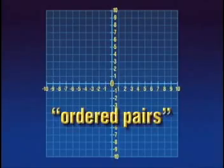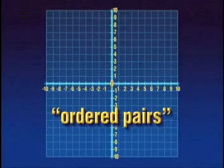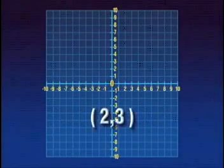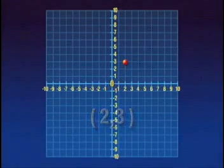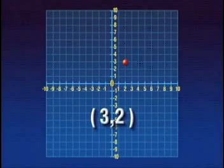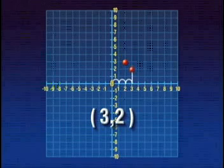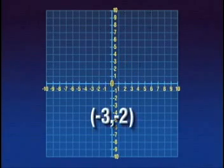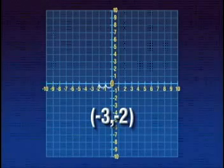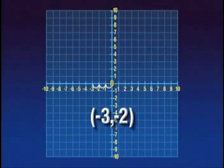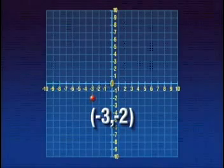We use ordered pairs to describe positions of points on the rectangular plane. The ordered pair (2, 3) means over positive 2 and up positive 3. Where do you suppose the point (negative 3, negative 2) is located? In this case, the x-coordinate is negative, so you would move three places to the left of the origin. And since the y-coordinate is also negative, you would move two spaces down.